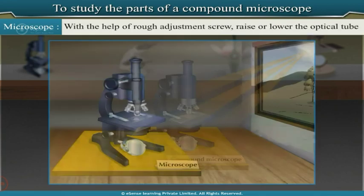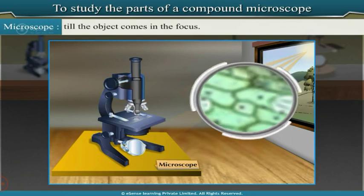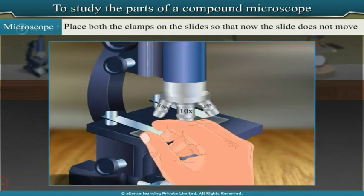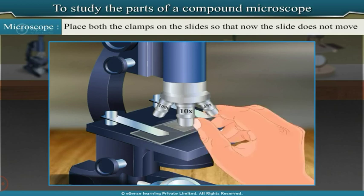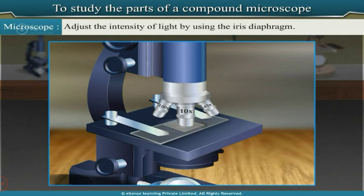With the rough adjustment screw, raise or lower the optical tube until the object comes into focus. Place both clamps on the slide so it does not move from your required focus. Adjust the intensity of light using the iris diaphragm.